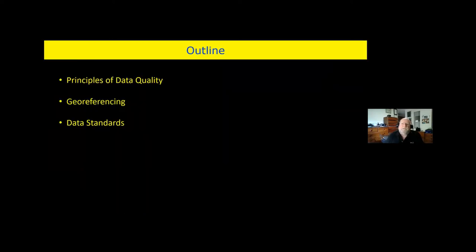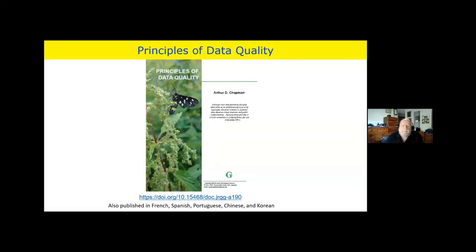Today I'm going to talk about three aspects: principles of data quality, georeferencing, and data standards. The principles of data quality go back to a book I prepared for the Global Biodiversity Information Facility some time back. You can see the DOI there. It's also available in French, Spanish, Portuguese, Chinese, and Korean.